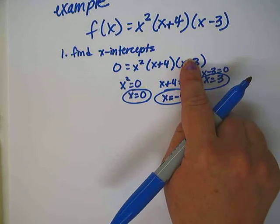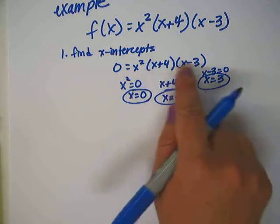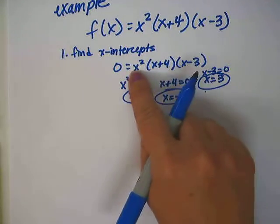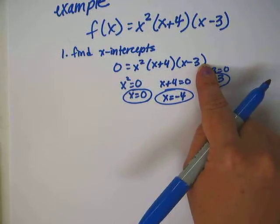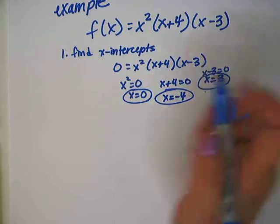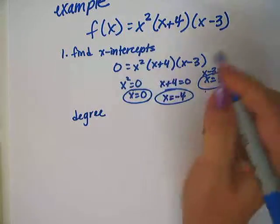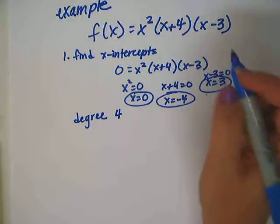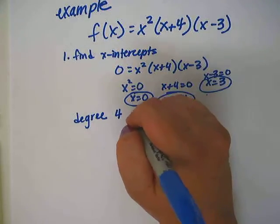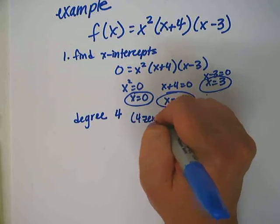x minus 3 equals 0, so x equals 3. There are three zeros. What would the degree of this function be? The degree would be x squared times x times x if we foiled the whole thing out. So the degree will be 4.